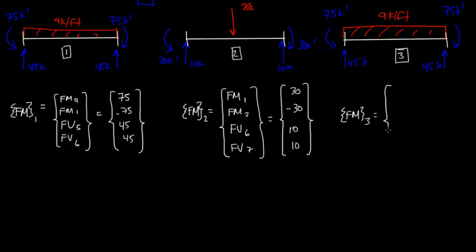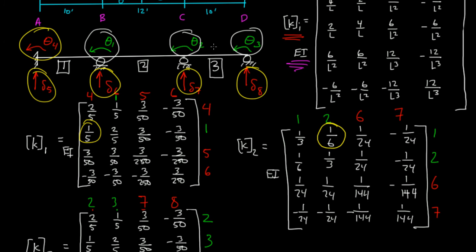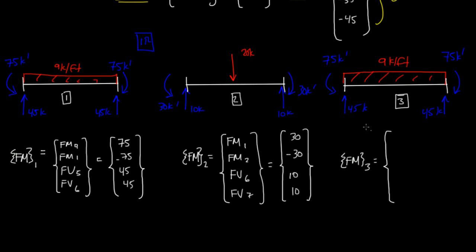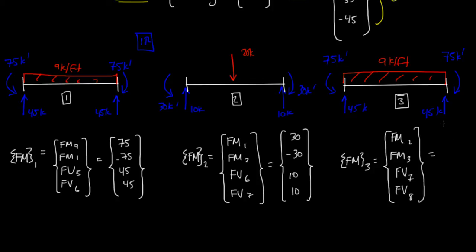FM 3 would be, in order of degrees of freedom: we have 2, 3, 7, 8. The first two are rotational and the last two are vertical — FM, FM, FV, FV for degrees of freedom 2, 3, 7, and 8. The fixed moment at degree of freedom number 2 is this positive 75. Then FM 3 on the right side is a negative 75. Then you have 45 kips going up for degree of freedom 7, and 45 again for the right side of element 3.